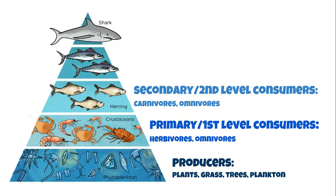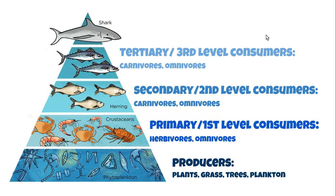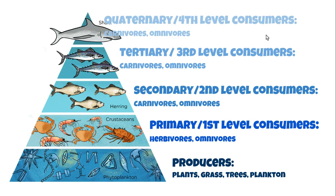The fourth trophic level are the tertiary consumers — again, could be organisms that are carnivores or omnivores. And the fifth trophic level are the quaternary consumers; it could be organisms that are carnivores or omnivores. It's really important to remember that any consumer in an ecosystem could be a part of any or all of these trophic levels, minus the producer level. It all depends on what they're eating at the time in their particular chain.